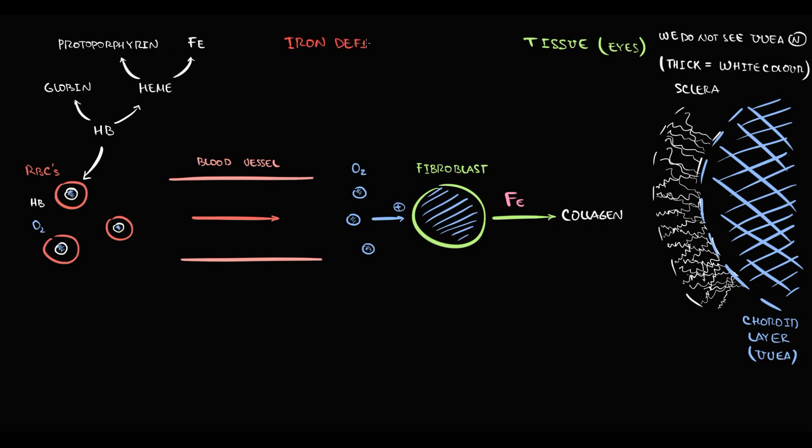In iron deficiency, first of all we have less iron for hemoglobin production. Decreasing hemoglobin level we call anemia. And with anemia we have less hemoglobin to carry oxygen. So the delivery of oxygen to the tissues begins to decrease. And it's critical because fibroblasts require oxygen for their function. Now with decreasing oxygen delivery, fibroblasts begin to produce less collagen.